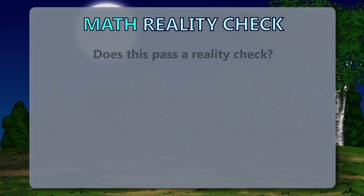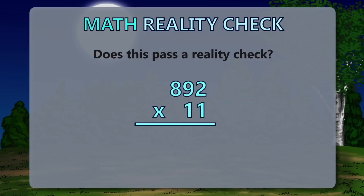Does this pass the reality check? 892 times 11 equals 37,475. No, it does not.